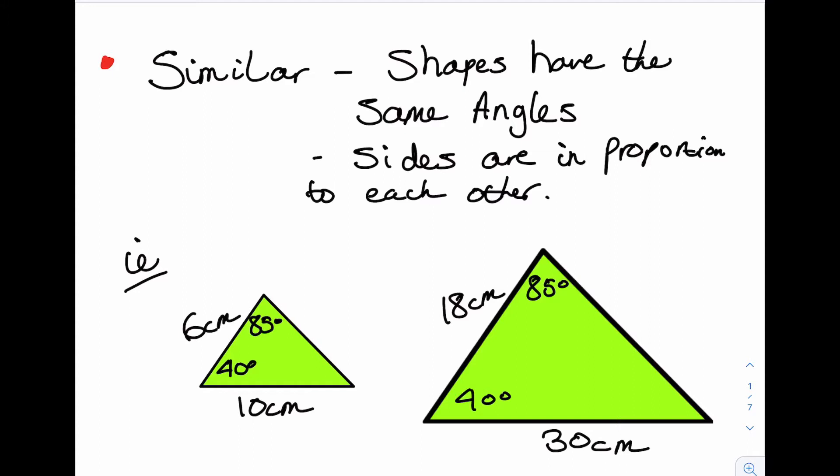We have to do that for them to be similar. And this thing we're timesing by to get 6 to 18 is called the scale factor. And we'll use that a lot when we're trying to find missing lengths. So let's go straight into an example to see how this works in practice.